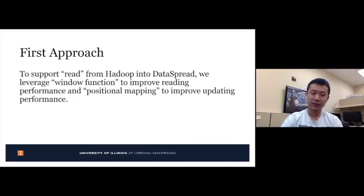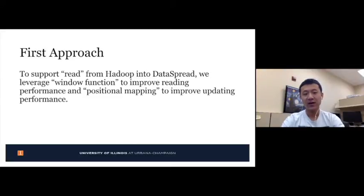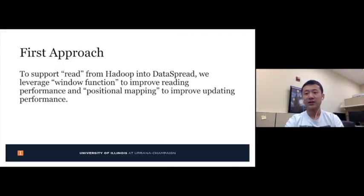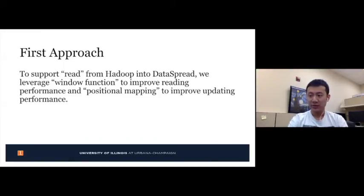We have two approaches. First, to support reading from Hadoop into DataSpread, we leverage a window function to improve reading performance and positional indexing to improve uploading performance. By using DataSpread's window function, we only load data visible in the current window size so users won't experience a large lag when loading data initially. In addition, we adaptively create a partial index for Hadoop and build a new type mapping layer to match positional indices in DataSpread, allowing us to access any lines of a Hadoop file to present.